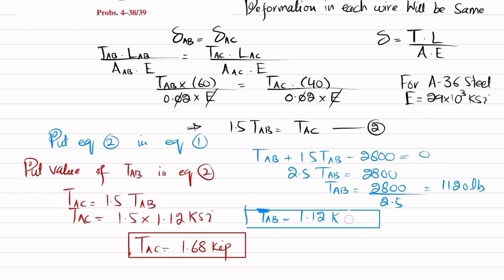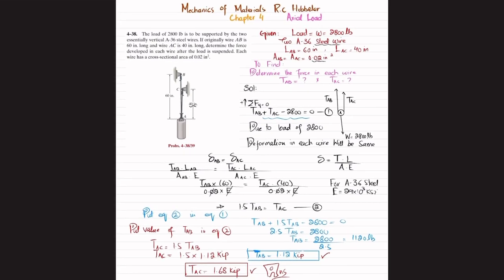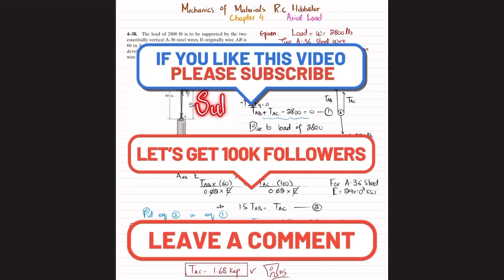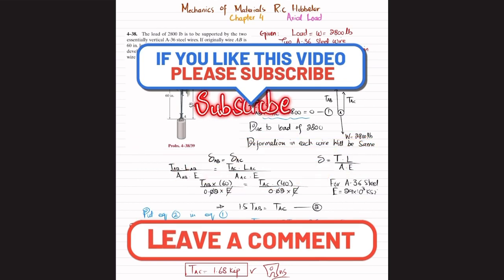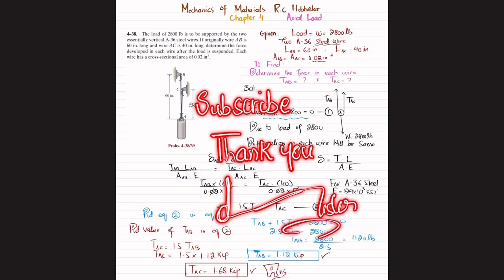So the final answers for problem 4-38 are: the force developed in wire AB is 1.12 kips, and the force developed in wire AC is 1.68 kips. I hope you enjoyed this video and learned from it. If you are new to my channel, please subscribe and press the bell icon for notifications on new videos. If you have any questions, ask in the comment section. Thank you for watching and supporting.